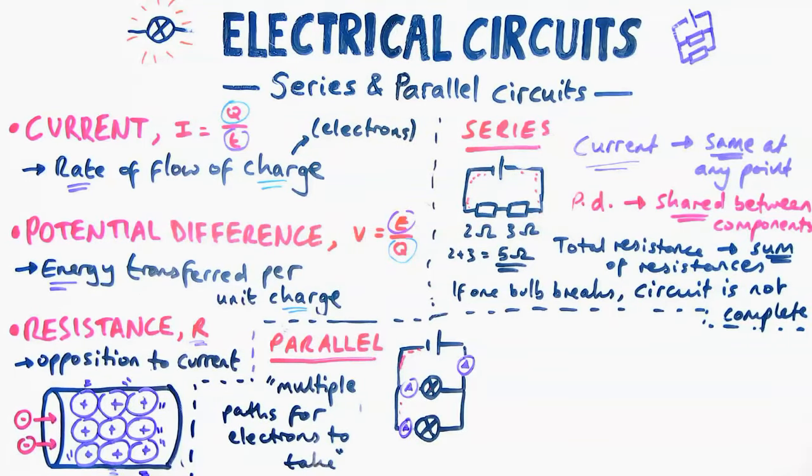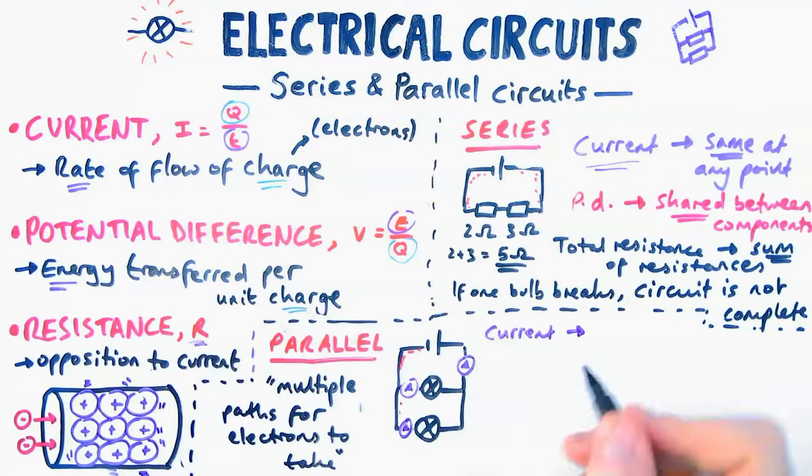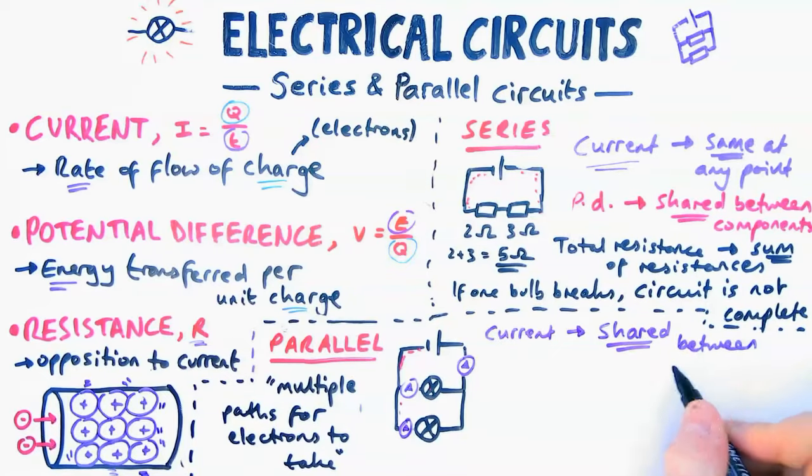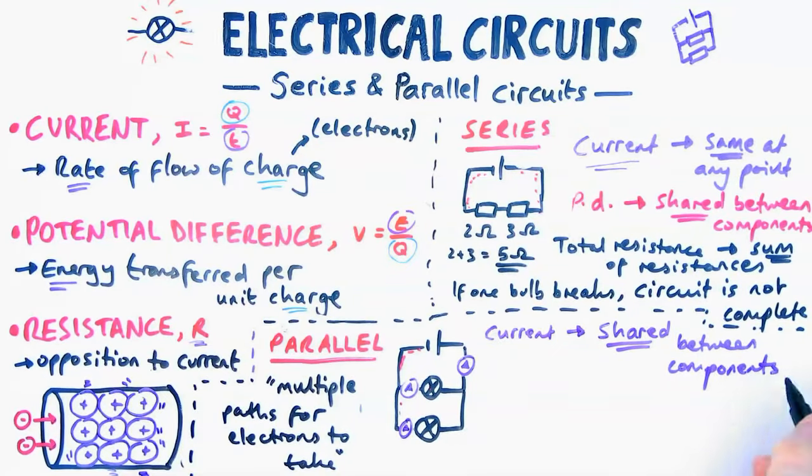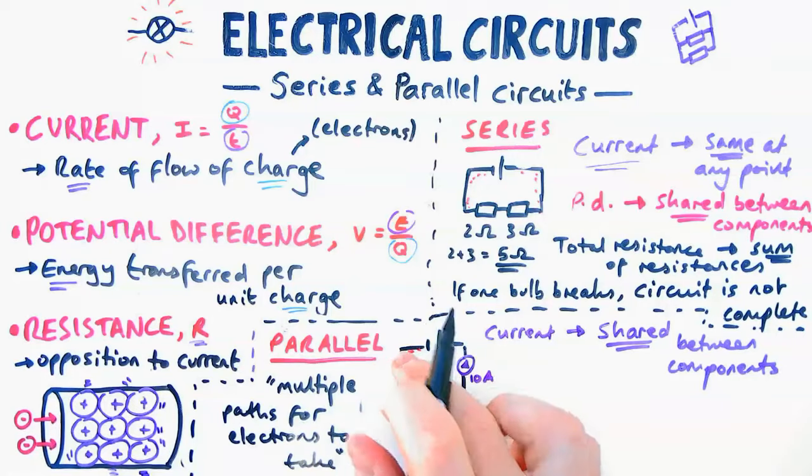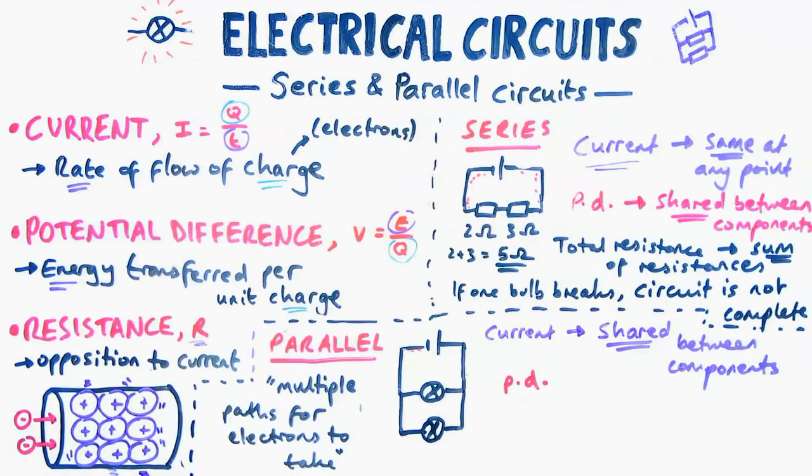So let's analyze the current at different points, like we did with series circuits. I'm going to place ammeters at a couple of different points. And because the electrons can split up into different paths, the current isn't the same everywhere. It is shared between the branches. So if I had 10 amps at the start, and it splits into two even branches, I've now got five amps here, and five amps down the bottom.